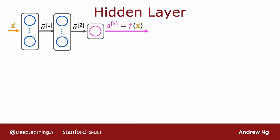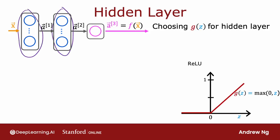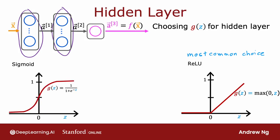How about the hidden layers of a neural network? It turns out that the ReLU activation function is by far the most common choice in how neural networks are trained by many practitioners today. Even though we initially described neural networks using the sigmoid activation function — and in the early history of neural networks, people used sigmoid in many places — the field has evolved to use ReLU much more often, and sigmoid hardly ever, with the one exception being the output layer for a binary classification problem.